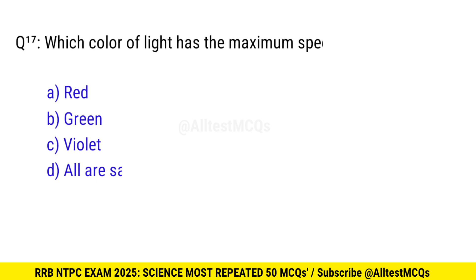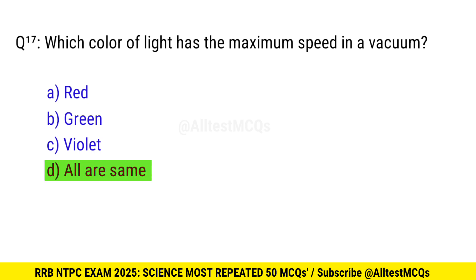Question 17. Which color of light has the maximum speed in a vacuum? Right option is D, all are the same.